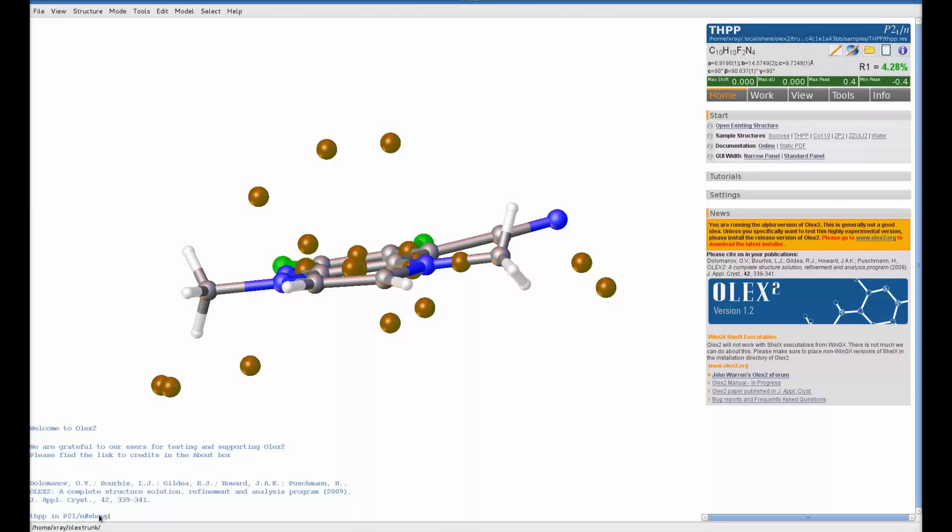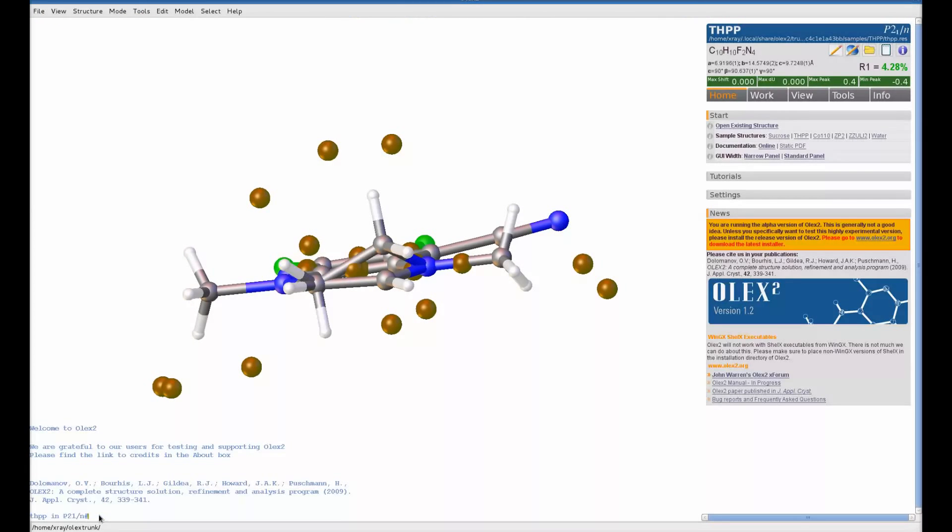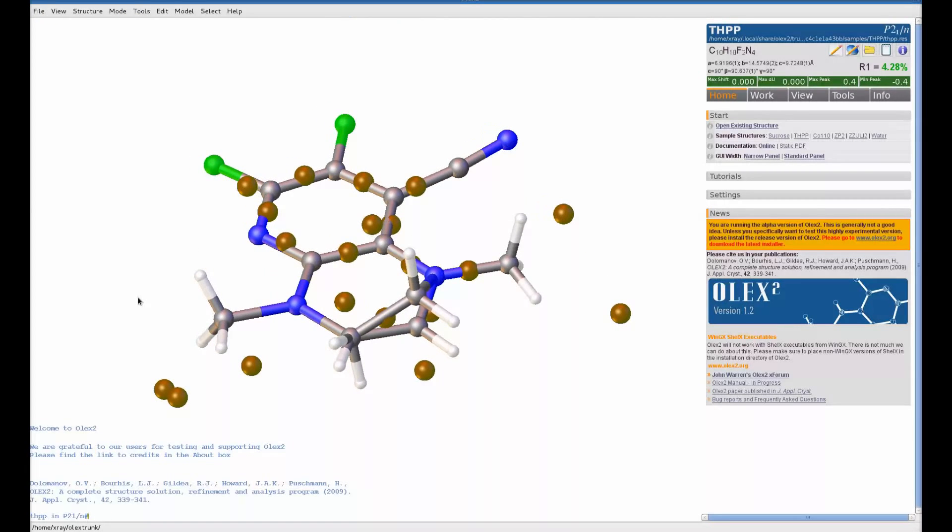If we want to go back to showing the whole model, we can type SHOWP. OLIX2 will retain that SHOWP level across multiple refinements, which makes it really useful for refining disorder. And that's it, that's SHOWP.